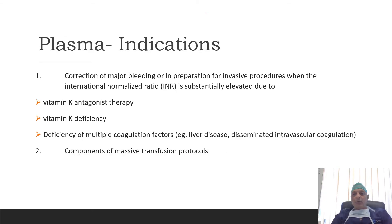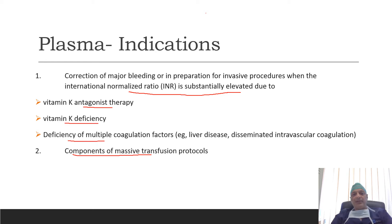The indication of plasma transfusion is not as evidence-based as RBC transfusion. The major indications are two: first, as a part of massive transfusion protocol; and second, whenever the INR is substantially elevated either due to vitamin K antagonist therapy, vitamin K deficiency, or deficiency of multiple coagulation factors as occurs in liver disease and DIC, and the patient is bleeding or requiring some invasive procedures.